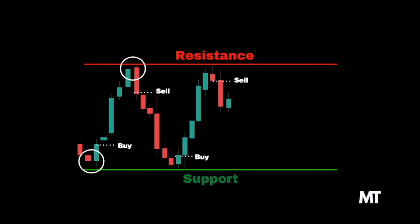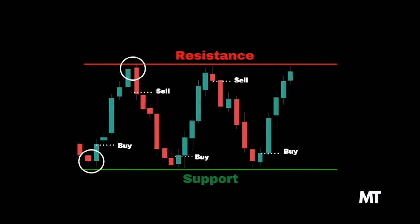Traders can trade market ranges by buying at support and selling at resistance. To enter a trade, it is always best to add other important confluences, such as oversold and overbought indicators, key price levels, financial data awareness, and price action confirmation.